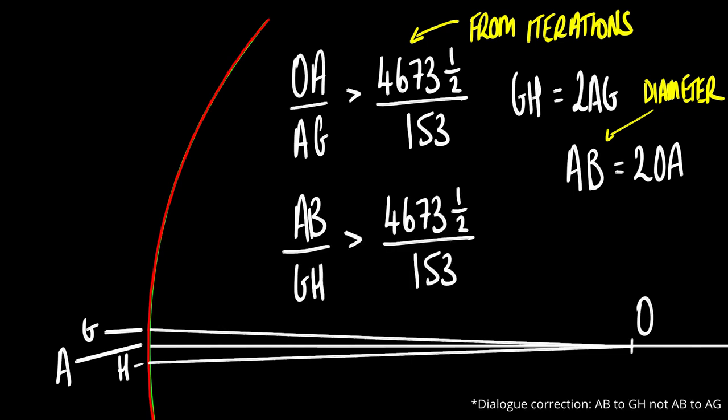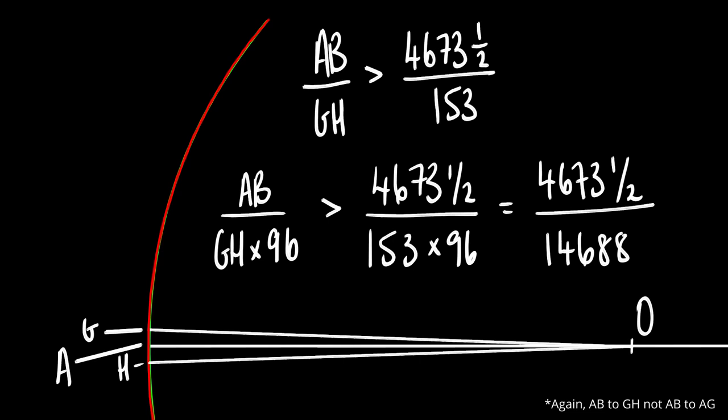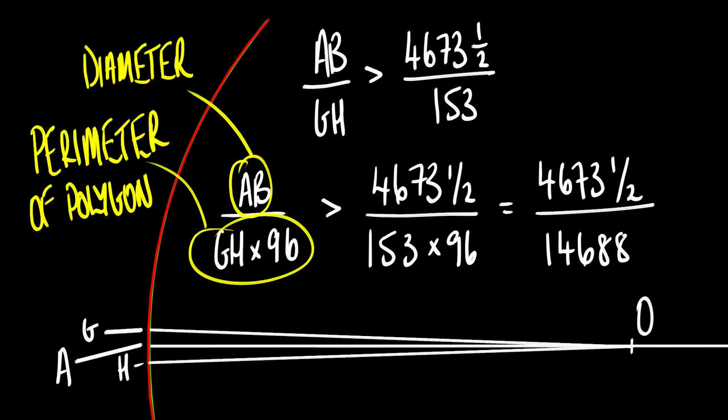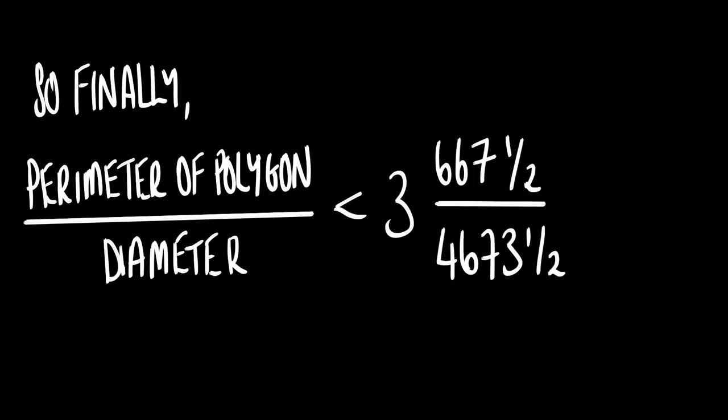So AB to AG holds the same ratio and is also greater than 4,673 and a half to 153. So AB to AG times by 96, which would then be the total perimeter, is greater than 4,673 and a half to 153 times 96, or 14,688, which reveals that the ratio of the perimeter of the polygon to the diameter of the circle to be less than 3 and 667 and a half over 4,673 and a half, which Archimedes approximates to be less than 3 and one-seventh. So pi can't possibly be greater than 3 and one-seventh, which it isn't. So Archimedes was off to a great start.